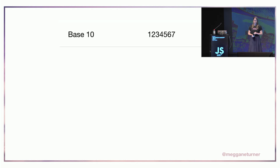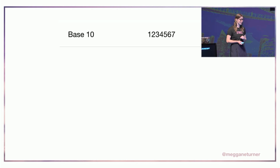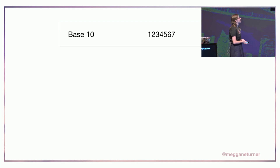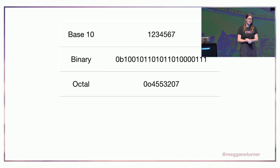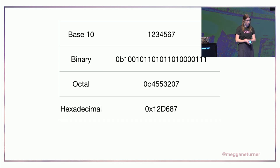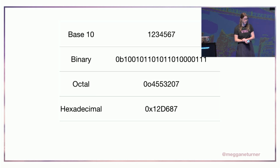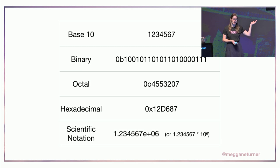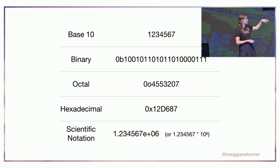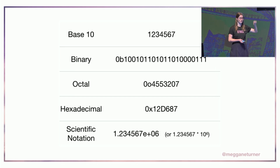We have our standard base 10 — if we imagine the number 1,234,567. We can also represent that as a binary number, which is base two. Octal, which is base eight. Hexadecimal, which is base 16 — you'll use that a lot if you're working with CSS. And scientific notation, which is what we use when handling really large numbers. That 'e' means times ten to the power of six in this case.